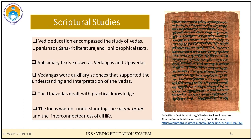Thirdly, scriptural studies — Vedangas and Upavedas. In addition to the Vedas, there were subsidiary texts known as Vedangas and Upavedas. Vedangas were auxiliary sciences that supported understanding and interpretation of the Vedas, including subjects like Phonetics, Grammar, Astronomy, Ritual and Prosody. The Upavedas dealt with practical knowledge and included fields like Ayurveda, Dhanurveda, Gandharva Veda and Sthapatya Veda.